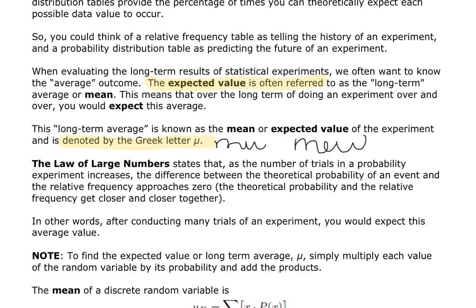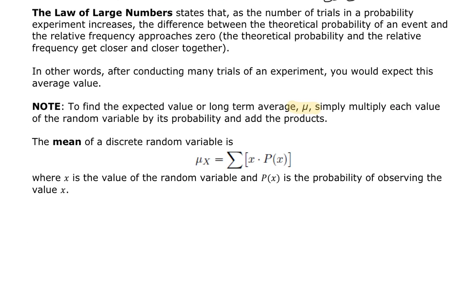When looking at the expected value or the long-term average, again this is mu. It looks like a U, but it's Greek mu. We simply multiply each value of the random variable by its probability and add up all of those products. The mean of a discrete random variable is calculated as mu of x equals the sum of x times P(x) — we take the expected value for x and multiply it by the probability of that actually happening.